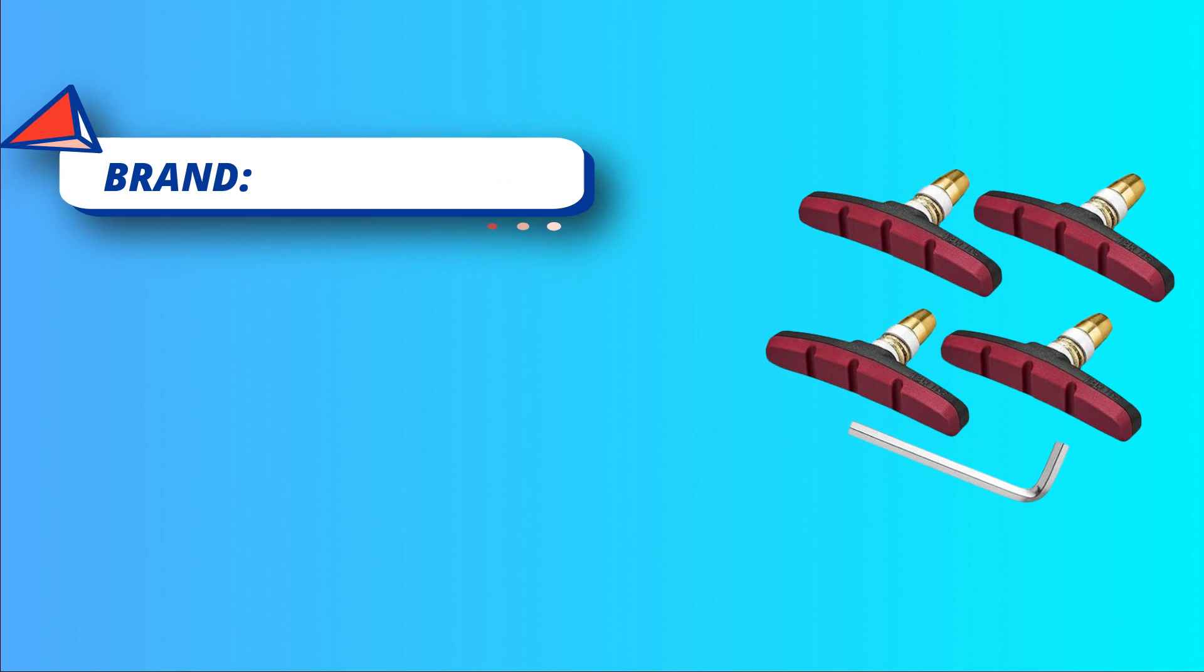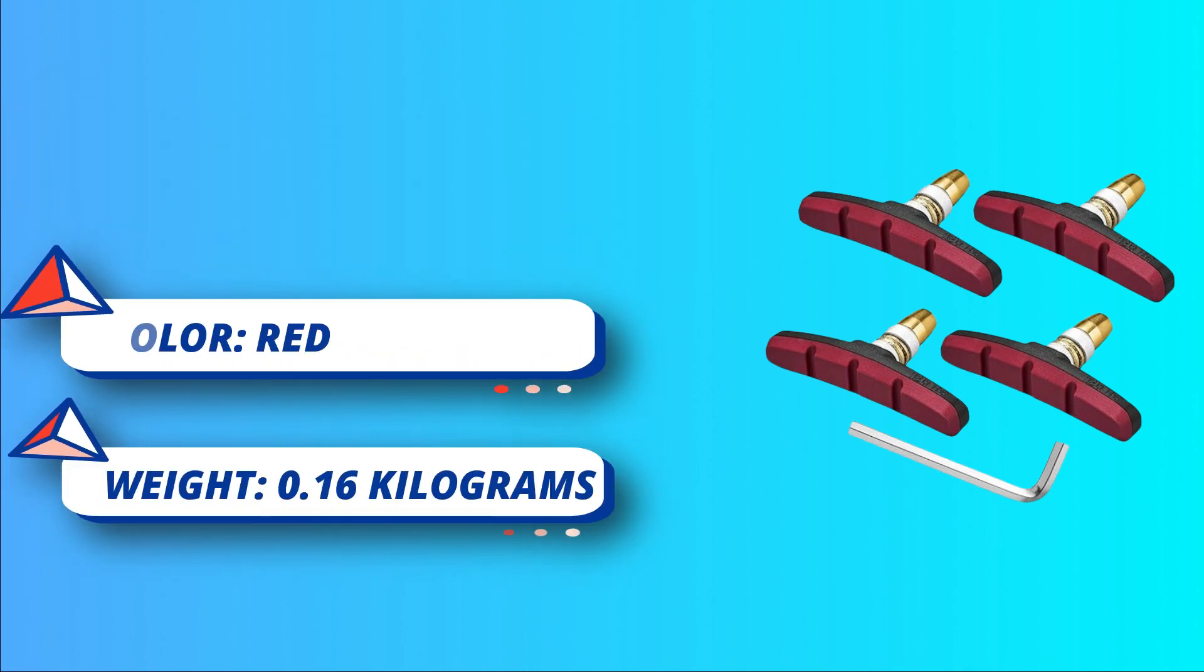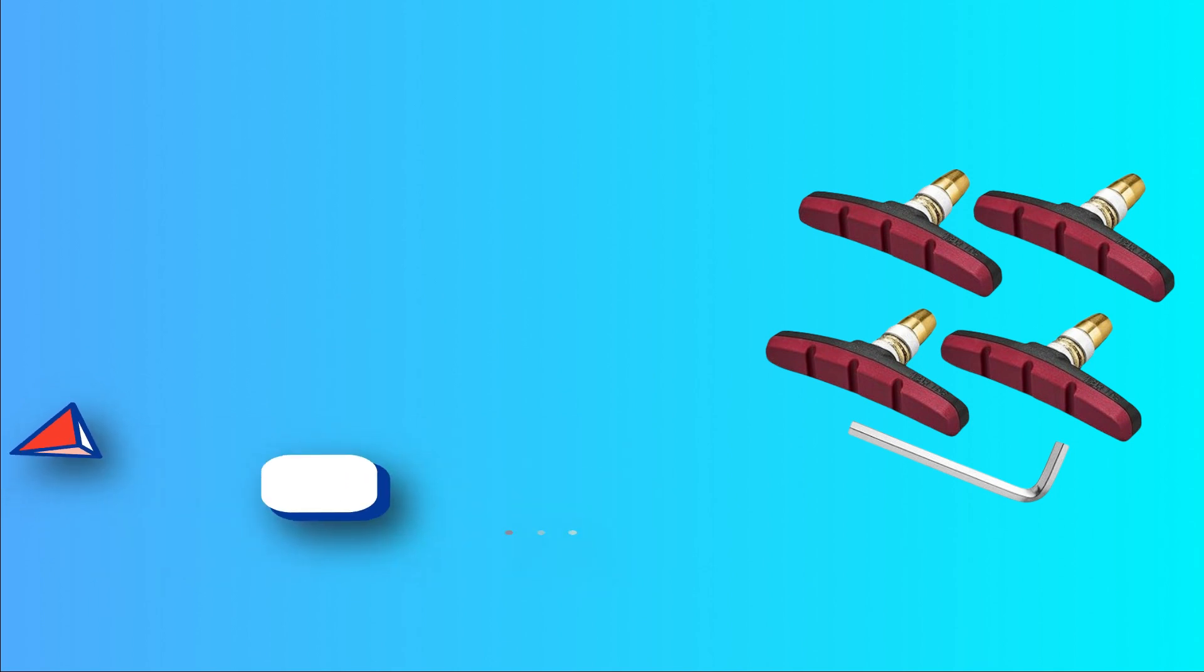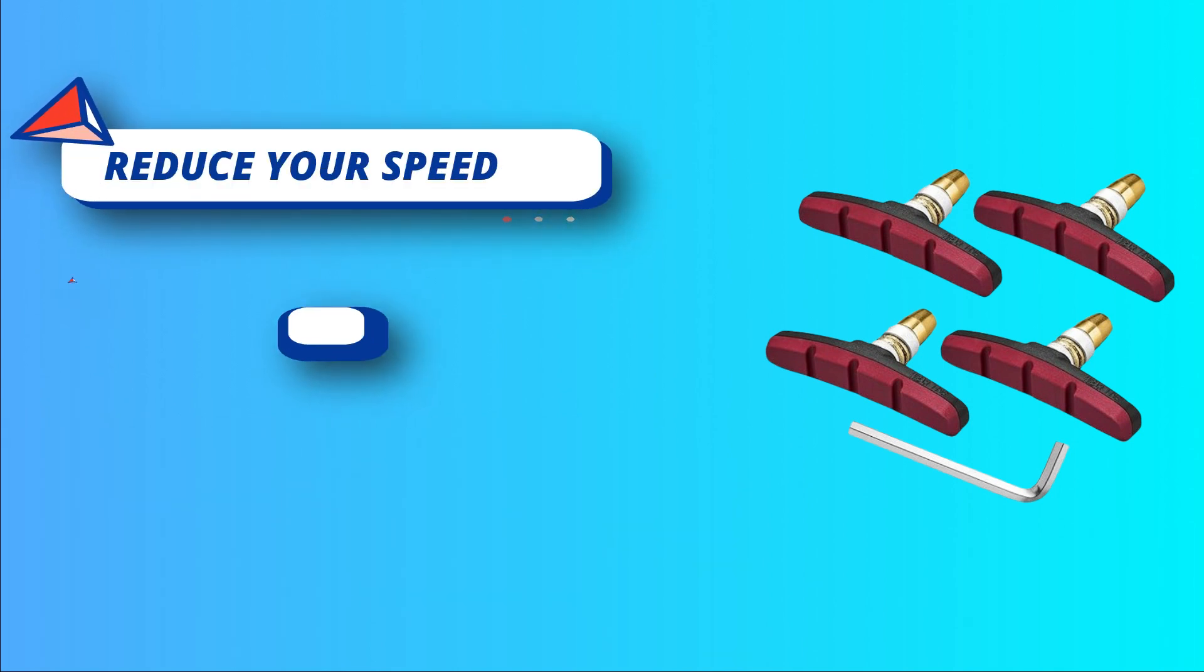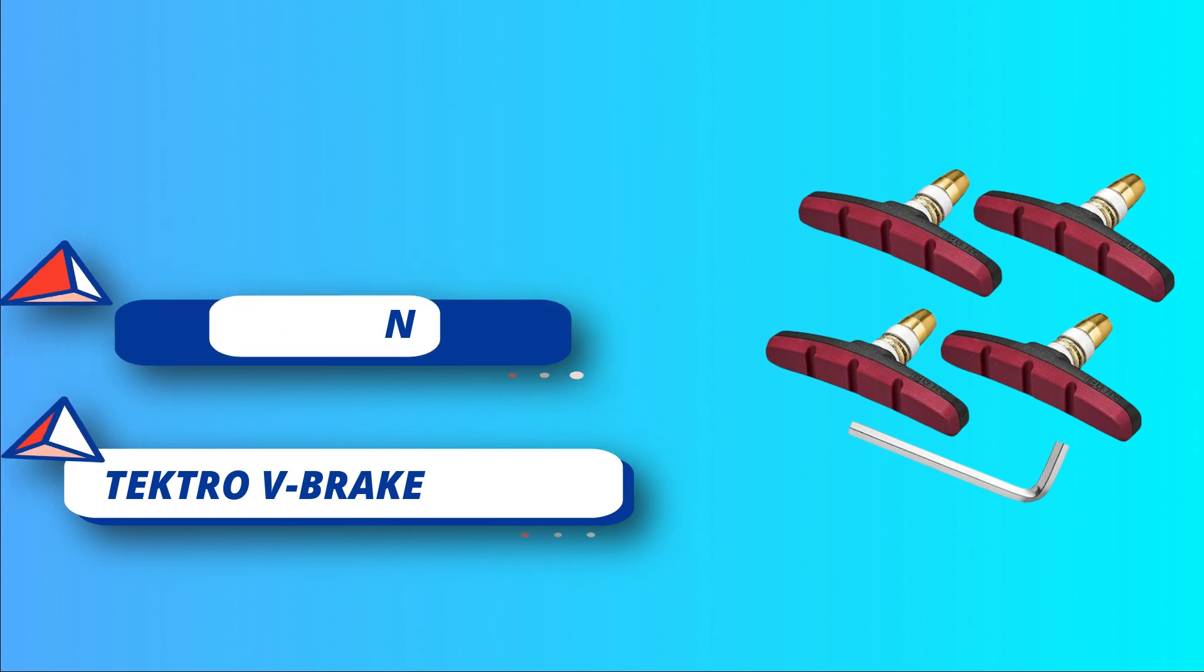V-brake shoes compatible with Shimano, SRAM, Avid, Tektro V-brake systems. It's easy to mount V-brake pads. You don't have to be an expert or a mechanic to know how to replace the bike brake pads. Bicycle brake pads replacement included two pairs of 70mm V-brake block.